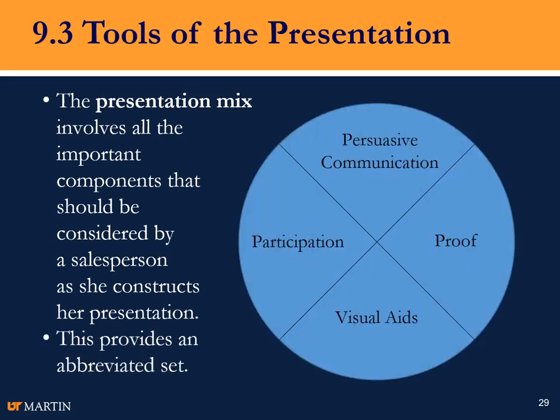There are going to be four main parts we're going to talk about. Some books will talk about six, but we've combined a few that seem to fit together. The ones we're going to talk about are persuasive communication, proof, visual aids, and participation.